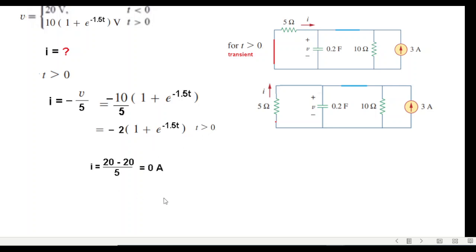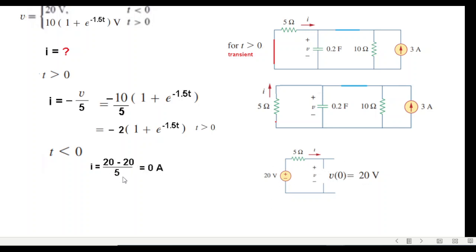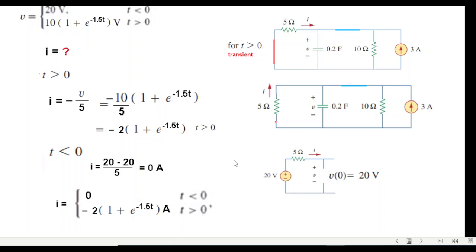For t less than zero, the switch is open. From the original circuit there is 20 volts on both sides of the 5-ohm resistor, so i equals (20 − 20)/5 = 0. Therefore the complete solution is: i equals 0 for t less than zero, and i equals the derived expression for t greater than zero. I hope you've been able to follow this — please let me know your feedback, thank you.